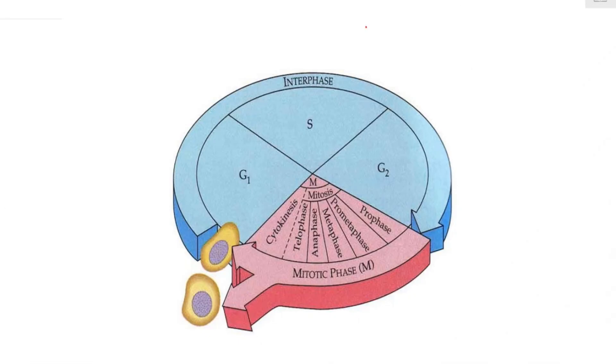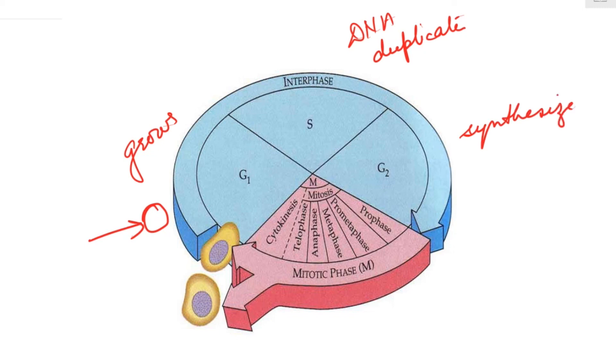So when a cell enters the interphase, it first enters the G1 stage where the cell grows. In the S phase, DNA duplicates. In the G2 phase, all that is required is synthesized for cell division. And as the cell enters the M phase, it gets divided into two daughter cells.